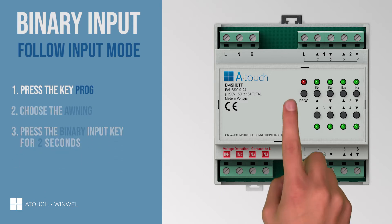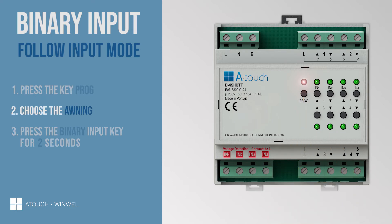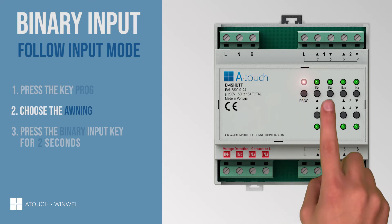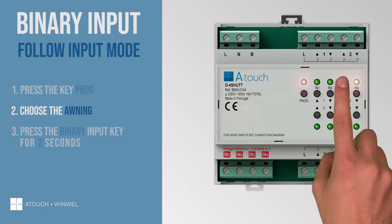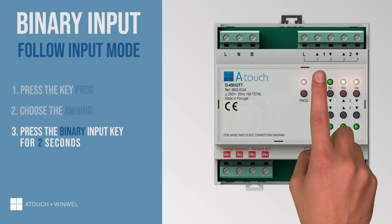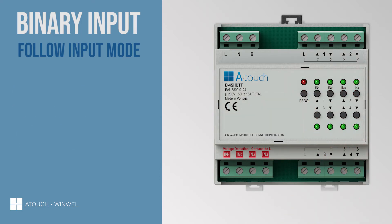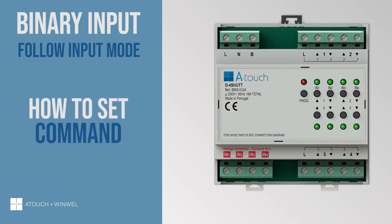Press the key prog. Choose the output where the awning is connected. Press the binary input key for two seconds to assign it. Now let's set the command on the binary input.